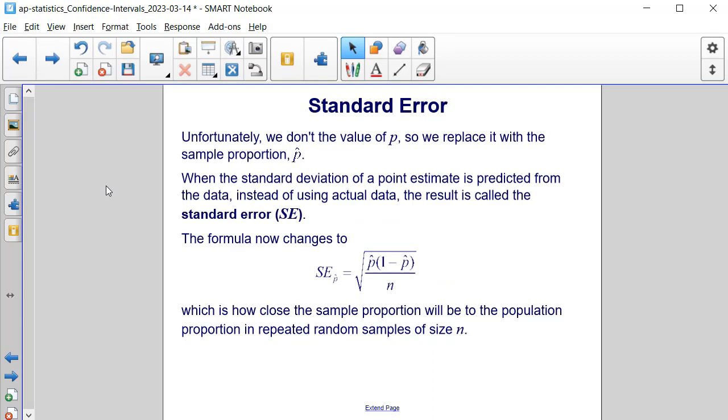Unfortunately, we don't have the value p, so we replace it with the sample proportion p-hat. When the standard deviation of a point estimate is predicted from the data instead of using actual data, the result is called the standard error, or SE for short. The formula now changes to the standard error of p-hat, which equals the square root of p-hat times 1 minus p-hat, all divided by n, which is how close the sample proportion will be to the population proportion in repeated random samples of size n.